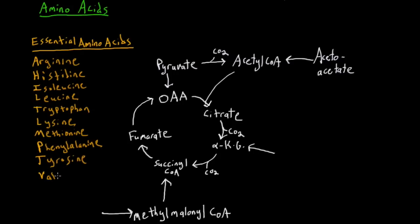There are a couple of exceptions to the rules for essential amino acids. In the case of tyrosine, it isn't technically an essential amino acid for adults because we're able to synthesize tyrosine from phenylalanine, but children do require more tyrosine than adults, therefore it's essential for children.